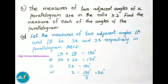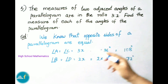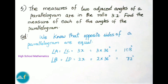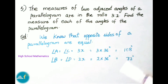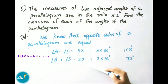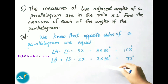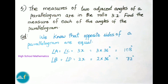Now we find all angles. Opposite angles of a parallelogram are equal, so angle A equals angle C equals 3x equals 3 times 36 equals 108 degrees. And angle B equals angle D equals 2x equals 2 times 36 equals 72 degrees. Therefore angle A and angle C are 108 degrees, and angle B and angle D are 72 degrees.